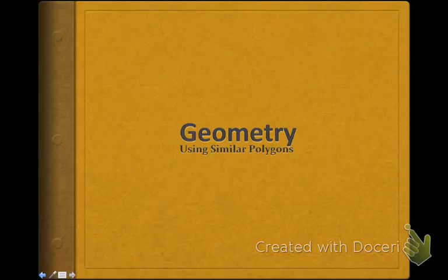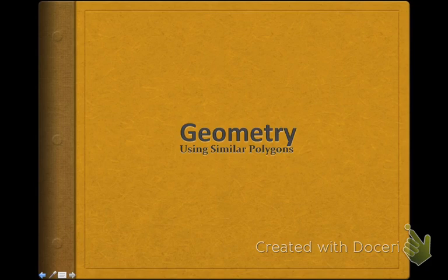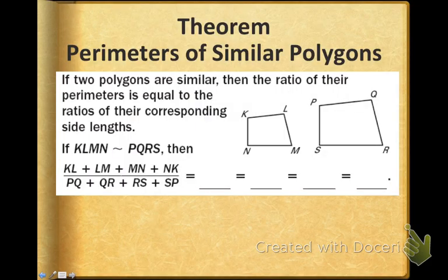Now that we know about similarity, we're going to use some of the properties of similarity to find unknown sides. First, you need to know that the perimeters of similar polygons are in the same ratio or proportion as the sides of similar polygons.